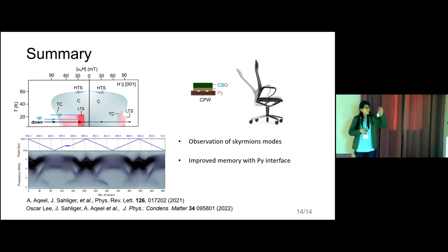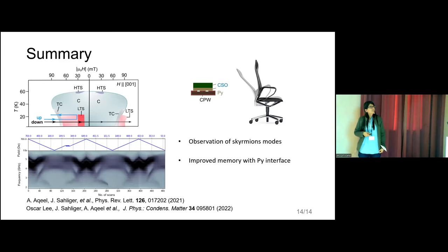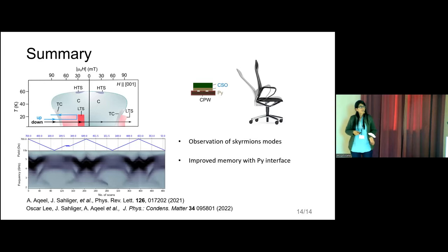To summarize: we can actually observe the skyrmion modes and improve the memory of these skyrmions, which are just magnetic knots in an otherwise magnetized material. There is a lot of room for engineering the interfaces with such chiral materials and looking at the magnetic band structure of these skyrmions.